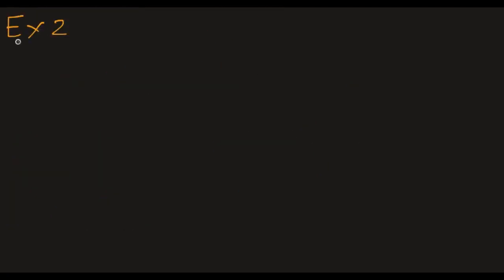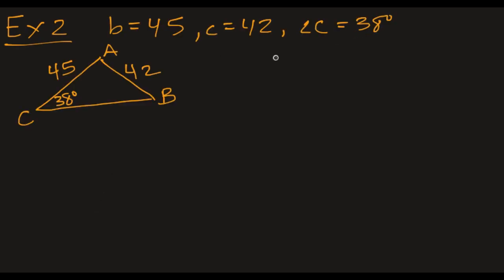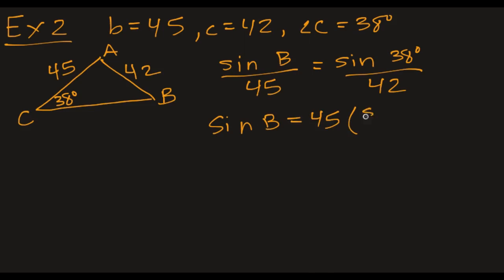Okay, let's look at another example where we don't have one unique solution. Okay, if the sides and angle are given as those, then what do we know? I'm going to solve for B first because I know side length B and angle C. So sine of B over 45 equals the sine of 38 degrees over 42. So the sine of B equals 45 times that right-hand side. So I use my calculator.